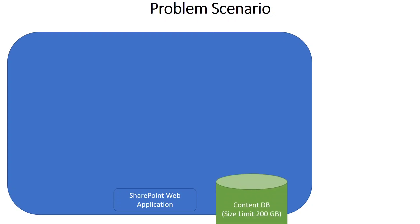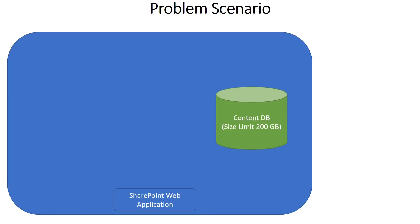The problem is that whenever you create a SharePoint web application, a content database is created by default. Microsoft recommends the size limit of this content database to be 200 GB. You can increase the content database size limit from 200 GB to a maximum of 300 GB, 400 GB, or even 500 GB, but as soon as you increase the data size beyond 200 GB, you pay the cost in performance.